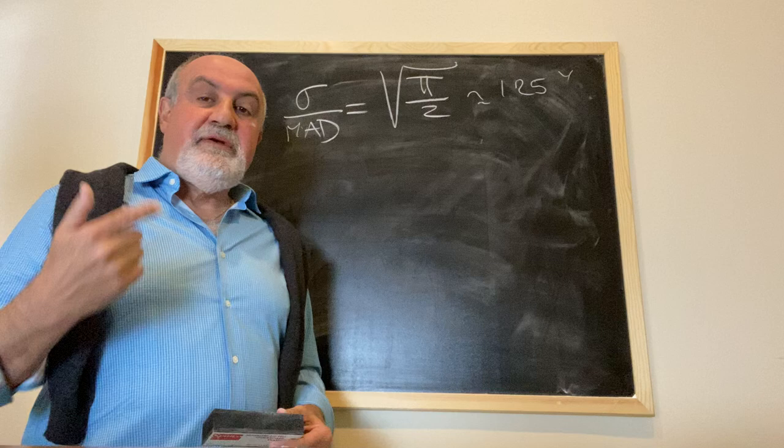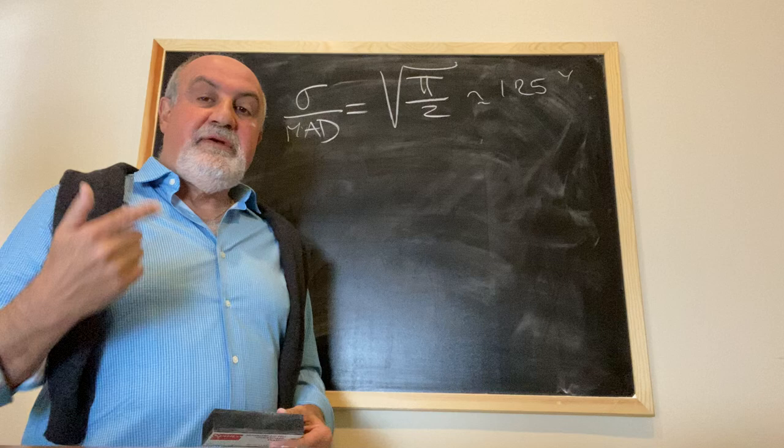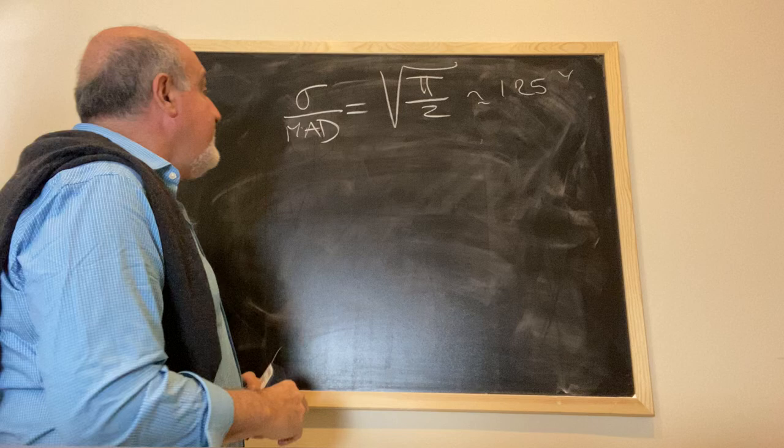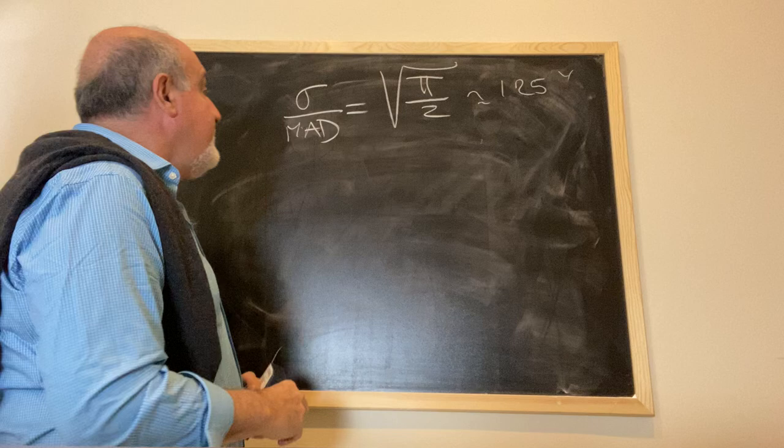That notion of squares is what really has fucked up statistics quite a bit. It worked for Gaussian. Even then, we're not that sure. So, let me explain, show you, for example, where mean average deviation doesn't matter to standard deviation.